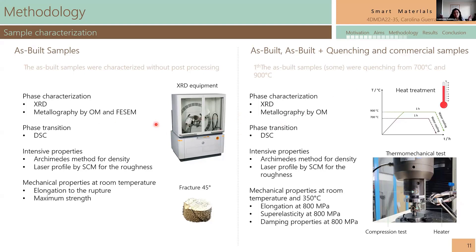I characterized the material by XRD and metallography in order to identify the phases, which are fundamental to shape memory alloys. I determined the phase transition temperature by DSC, and other intensive properties such as density and roughness were also measured. For the first part, I performed compressive strength tests to rupture and determined the elongation and maximum strength. To determine the shape memory properties, I carried out tests at room temperature and at 350 degrees Celsius, up to 800 MPa.